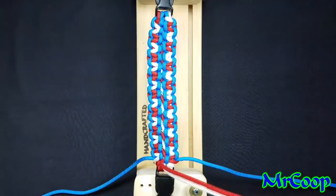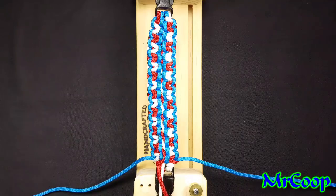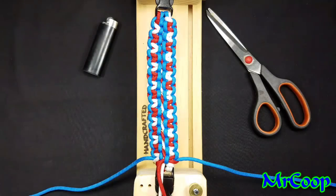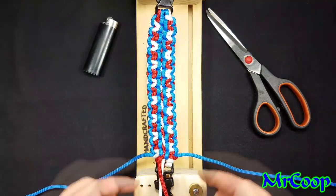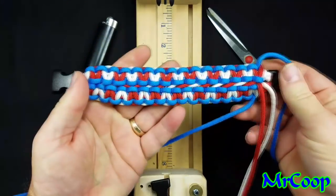Alright, guys and gals. That's how you make it. Now we'll show you how we finish it up here in just a second. If you'll hold on, let me grab my scissors and my lighter. Okay, guys. I got my scissors and my lighter. So I'm going to pull the bracelet off the jig. And that's the finished product. That's the back side.